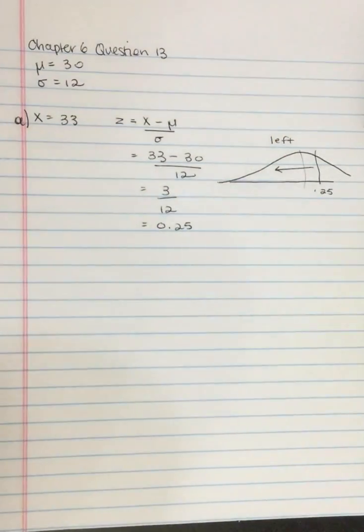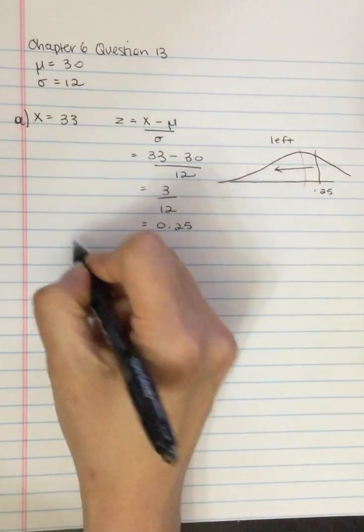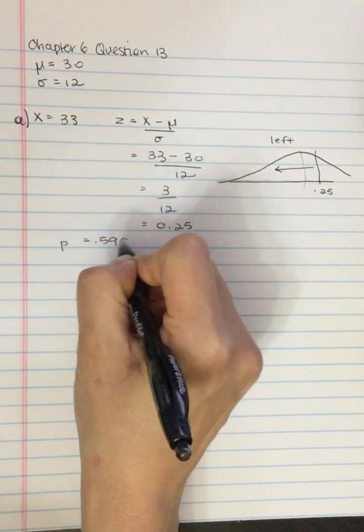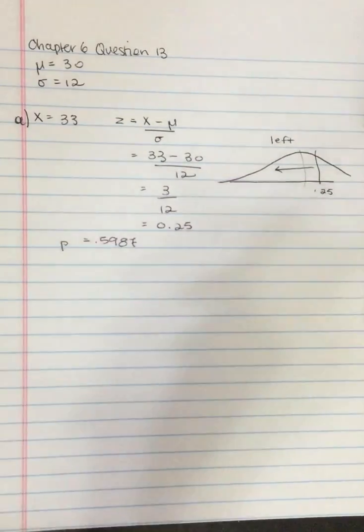So then we take that value, 0.25, we go to the unit normal table. We find the proportion in the body is p equals 0.5987. So there we go.